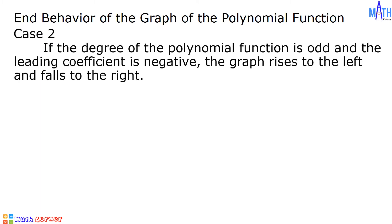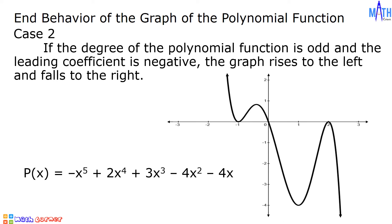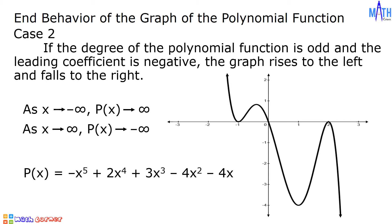Case number two: if the degree of the polynomial function is odd and the leading coefficient is negative, the graph rises to the left and falls to the right. Consider p of x equals negative x raised to 5 plus 2x raised to 4 plus 3x cubed minus 4x. The graph rises to the left and falls to the right. As x approaches negative infinity, p of x approaches positive infinity. As x approaches positive infinity, p of x approaches negative infinity.